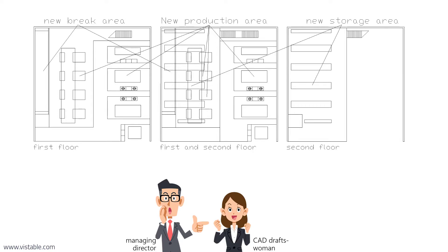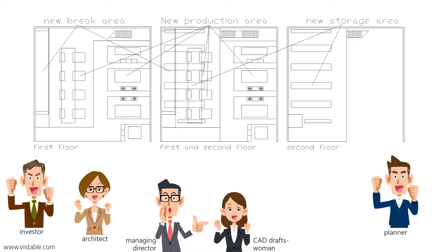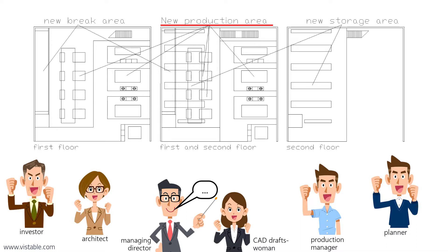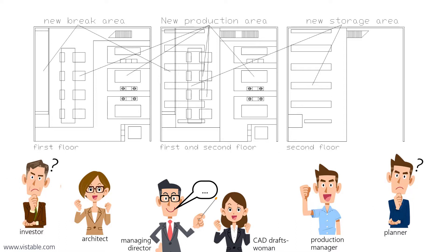The managing director invites one of his investors, his architect, his planner, and the production manager to the kickoff meeting for the project. All are very motivated and happy about the manager's idea to expand the factory. The manager presents the CAD drawing and tries to explain his thoughts. The planned extension contains a new production area, a new storage area, and a new break room. Unfortunately, those invited cannot really interpret the CAD plan very well, as 2D drawings are strongly abstracted compared to reality.